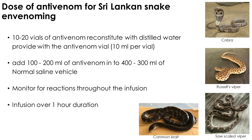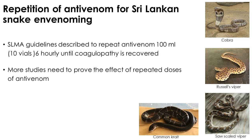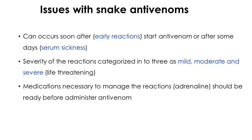The rate of development of reactions to antivenom does not depend on the rate of administration; therefore, it is recommended to administer antivenom over one hour, though the infusion can be extended up to two hours if preferred. Sri Lanka Medical Association guidelines recommend repeating antivenom administration by 10 vials every six hours if features of coagulopathy persist, though this is not recommended for common krait and other envenomations. Although repeated doses of antivenom are commonly given until coagulopathy resolves, the effect of repeated doses is yet to be proven by research. Snake antivenom is one of the medications with the highest rate of reactions in the world; Indian antivenom used in Sri Lanka carries a reaction rate of 35 to 80 percent.